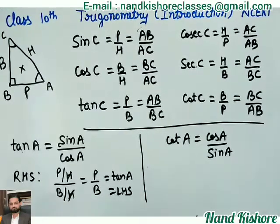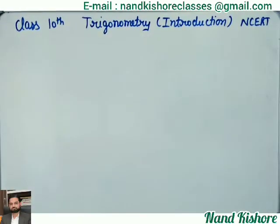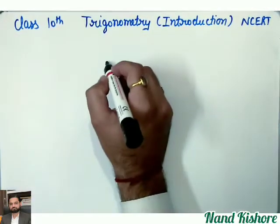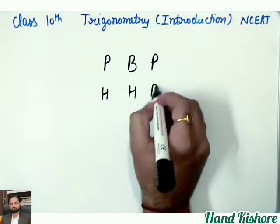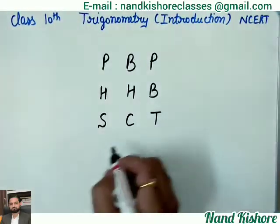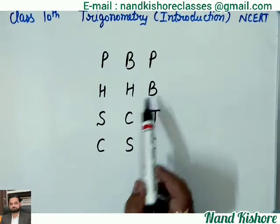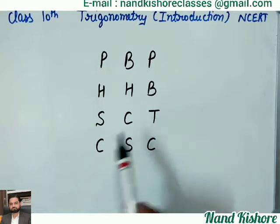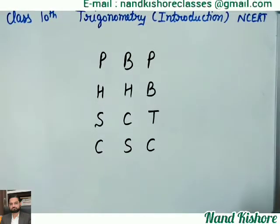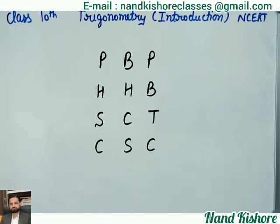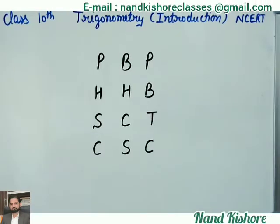These are all the formulas which we need to learn — and we are learning them through one pattern. That pattern especially we need to remember. Accordingly, we will be able to write all the trigonometric ratios. Let us revise the pattern once again. I hope you are clear now with all the concepts covered today. Introduction part is done. Tomorrow we will start the first exercise of this chapter on Trigonometry. Thank you.